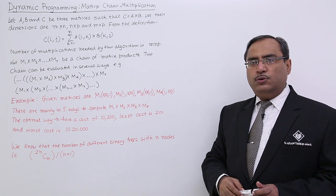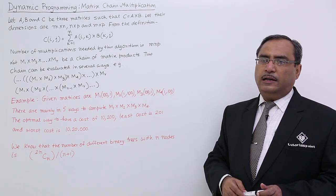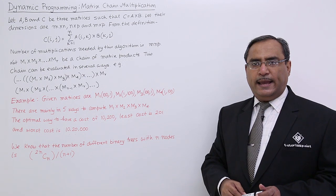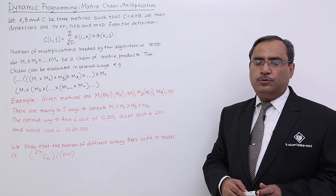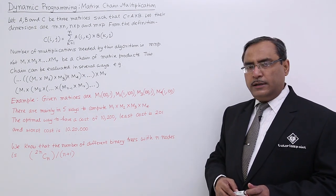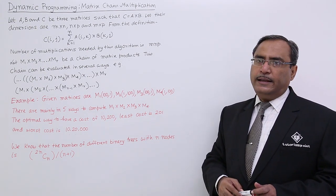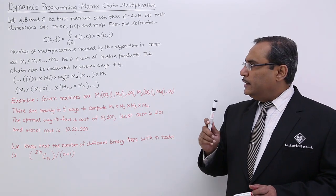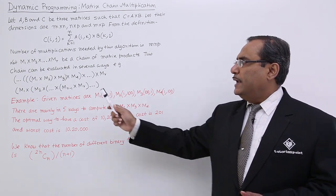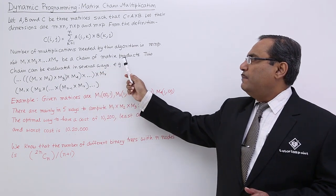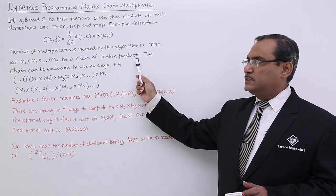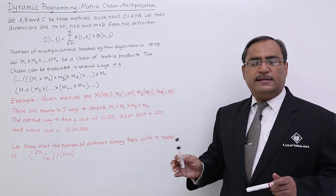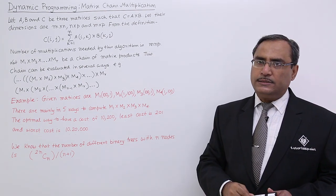Now let us go for chain matrix multiplication. Suppose we have matrices M1, M2, M3, ... MR all getting multiplied. M1 × M2 × ... × MR is a chain of matrix products. This chain can be evaluated in several different sequences and ways.